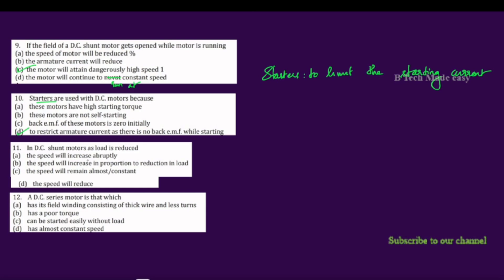Options for this question: the speed will increase abruptly; the speed will increase in proportion to the reduction of load; the speed will remain almost constant; or the speed will reduce. For a DC shunt motor, the speed remains almost constant even when the load is reduced. The constant speed characteristic is the defining feature of a DC shunt motor.